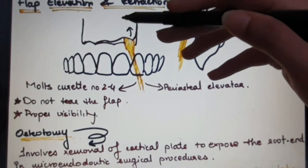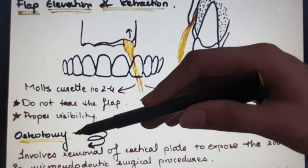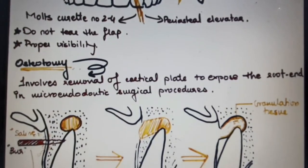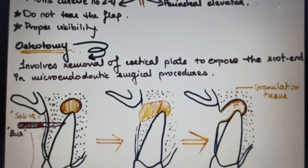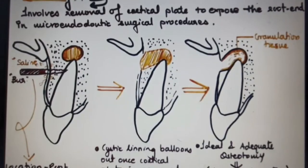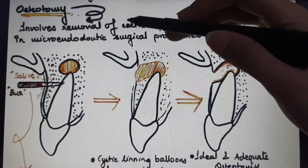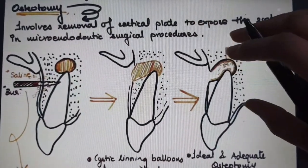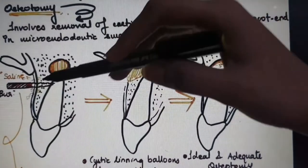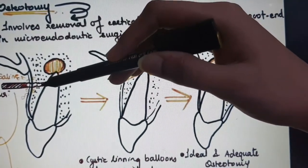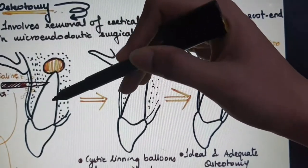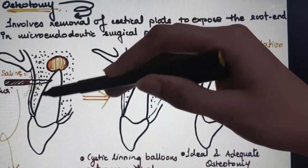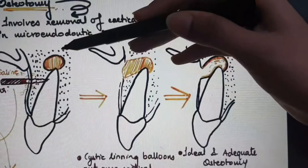Next is the osteotomy procedure involving removal of the cortical plate to expose the root end in microendodontic surgical procedures. This is the most important step of apexectomy, and hemostasis is the primary issue. First, a breach in the cortical plate is located, then probe gently with a DG-16 explorer to get a starting point for osteotomy, then replace the explorer with a burr.